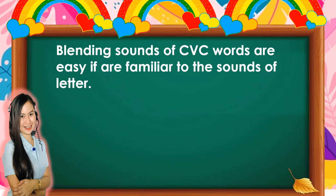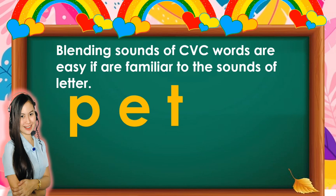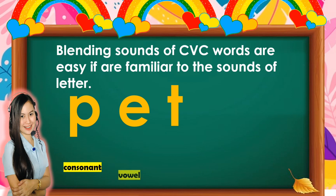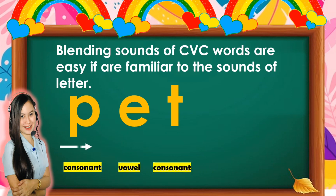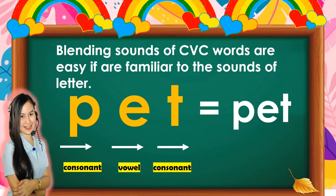Blending sounds of CVC words is easy if you are familiar with the sounds of each letter. In the word 'pet': P is consonant, E is vowel, and T is consonant. Let's blend it together — P, E, T equals 'pet'.